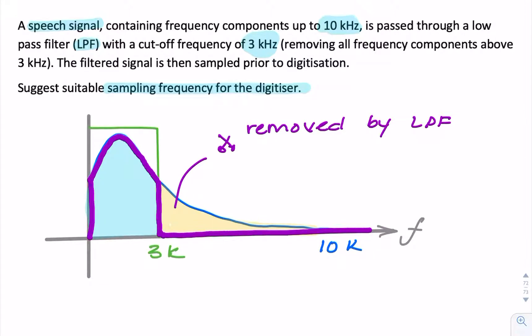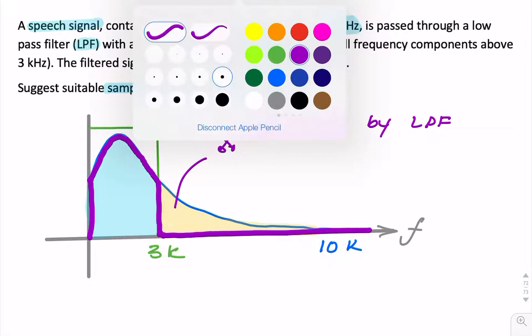So this is what we actually sample. So the question is, what's a suitable sampling frequency?